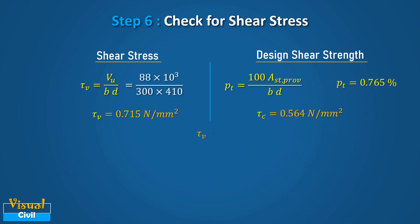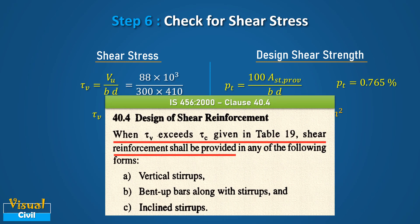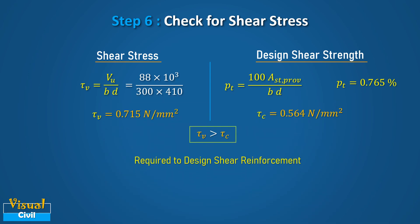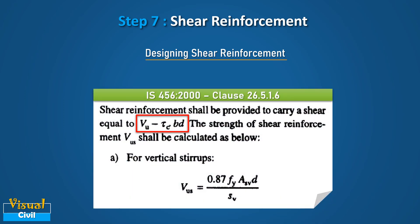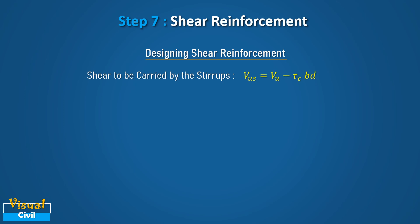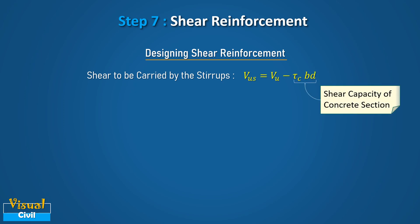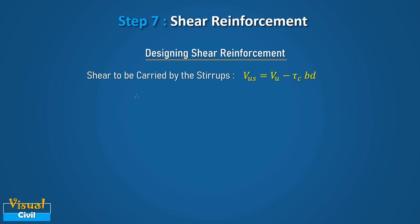Here, tau V is more than tau C, which means the acting shear stress is more than the shear strength of the beam section. Therefore, as per clause 40.4 of IS 456, when tau V is more than tau C given in table 19, shear reinforcement shall be provided. As per clause 26.5.1.6, the shear reinforcement shall be provided to carry a shear equal to VU minus tau C times B times D. After putting in the values of VU, tau C, B and D, we get the balance shear force for which shear reinforcement is to be designed, equal to 18.628 kN.